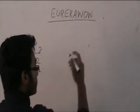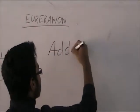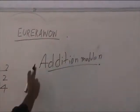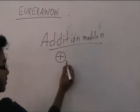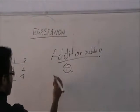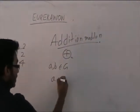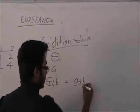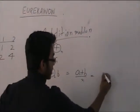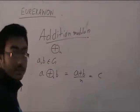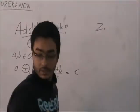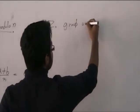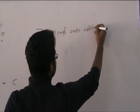What I am going to define next is addition modulo n. So this is another binary operation, usually denoted by this symbol. If I have a, b belonging to my set G, then a addition modulo n basically gives me the remainder when I divide a plus b by n. And whatever the remainder is, it gives me that value, which is known as C. There is a special group defined for this, known as Zn, which is the group under addition modulo n.